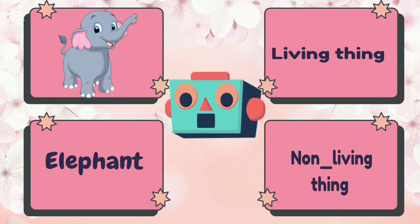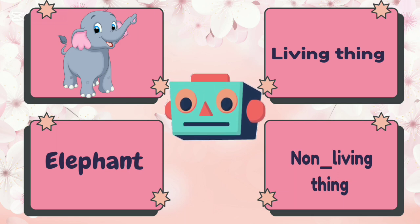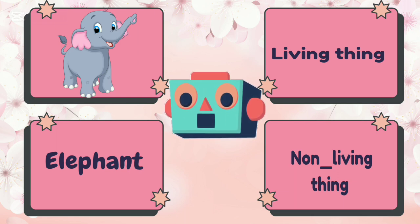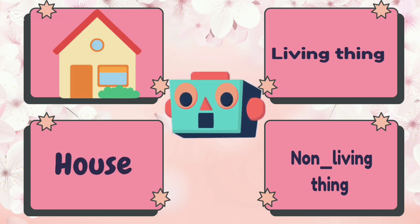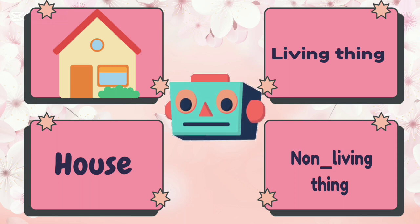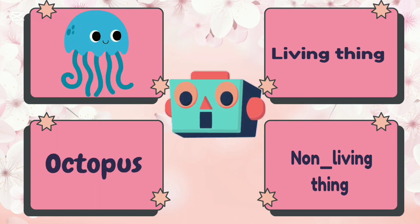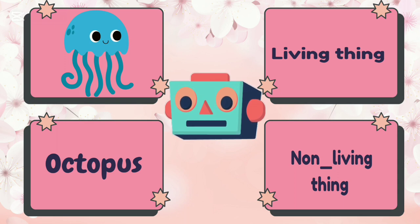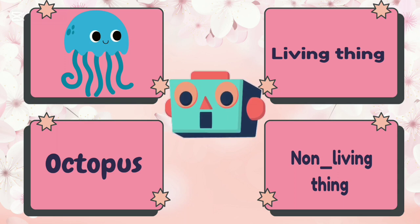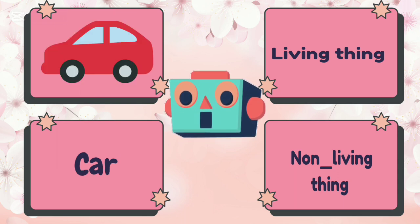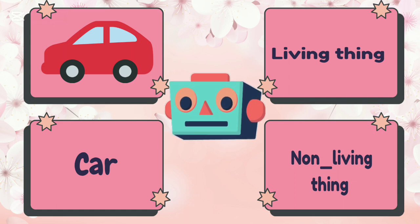Elephant is living thing or non-living thing? Elephant is living thing. House is living thing or non-living thing? House is non-living thing. Octopus is living thing or non-living thing? Octopus is living thing. Car is living thing or non-living thing? Car is non-living thing.